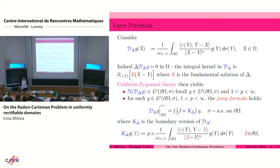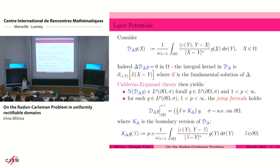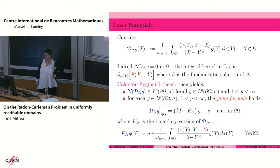This is a mechanism of generating a lot of harmonic functions. The function g, the density, is just a function defined on the boundary, imposing only conditions so that the quantity we're integrating is in fact integrable. The Laplacian of the double layer of g is equal to zero in the domain omega because there is harmonicity in the integral kernel of the double layer. The integral kernel of the double layer turns out to be nothing else but the normal derivative of the fundamental solution of the Laplacian evaluated at x minus y.